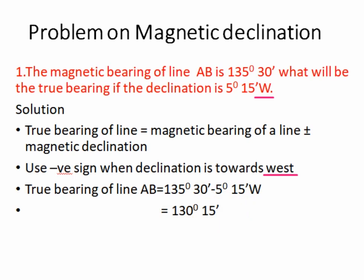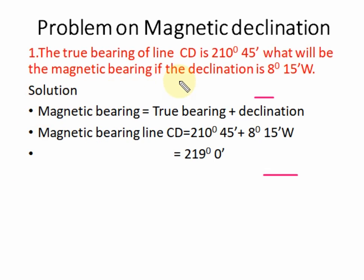Similarly, the true bearing of line CD is given and you need to find the magnetic bearing. Magnetic bearing equals true bearing plus declination, rearranged from the formula true bearing equals magnetic bearing plus or minus declination. Here the declination is given as west, so magnetic bearing equals true bearing plus declination, giving the value of 219 degrees.